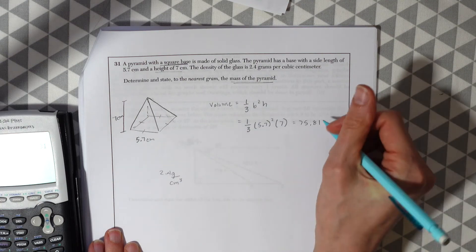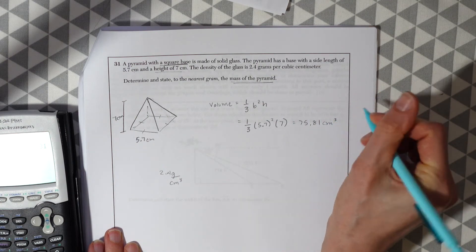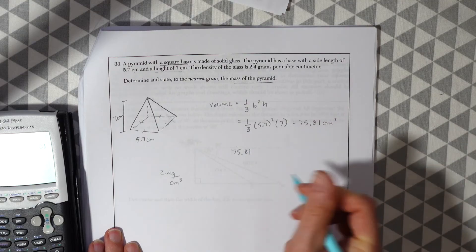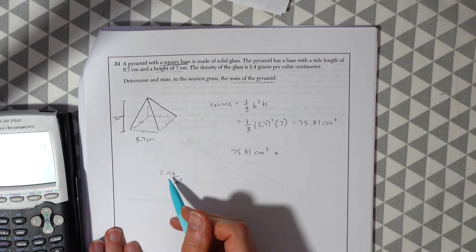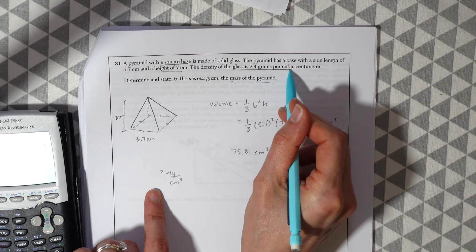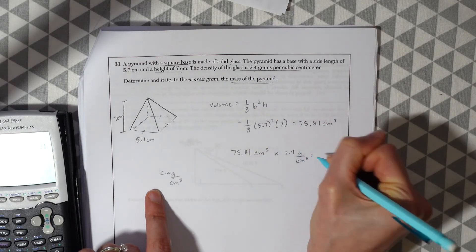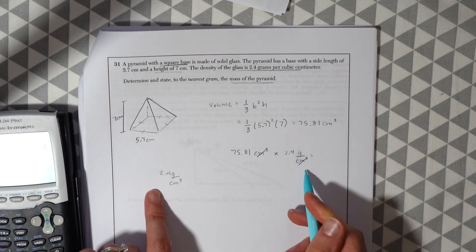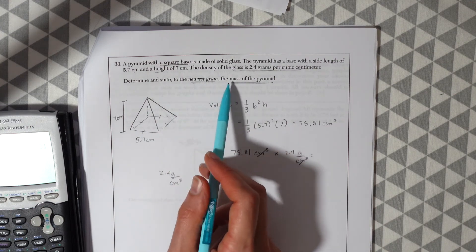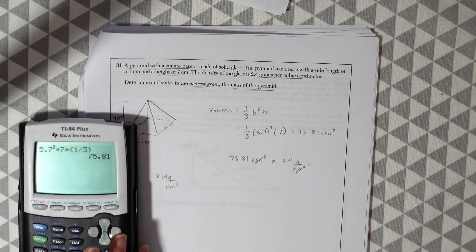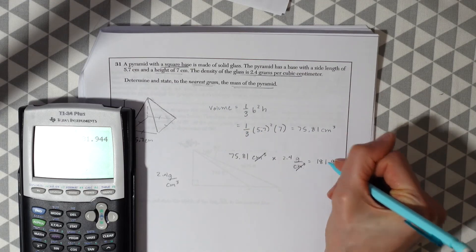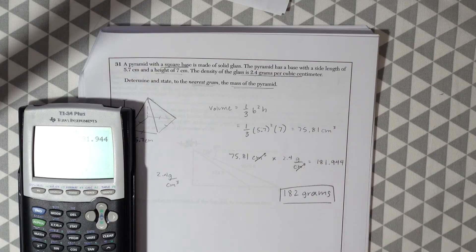So don't forget what we're working with was centimeters. So this is centimeters cubed because we multiplied these together. We're going to need to multiply these two numbers together. 75.81 which is the volume times the density which is 2.4 grams per centimeter cubed. And I just got this from up here, 2.4 grams per cubic centimeter. And what's going to happen is these are going to cancel out the centimeters cubed and then we're just going to end up with grams which will give us what they were looking for, the mass in grams. So let's multiply this together and we get 181.944 and it said to the nearest grams we're just going to round this up to 182 grams. And that's our answer.